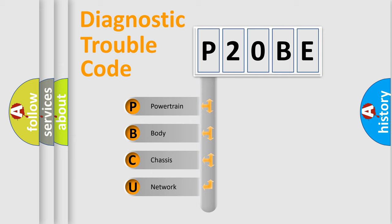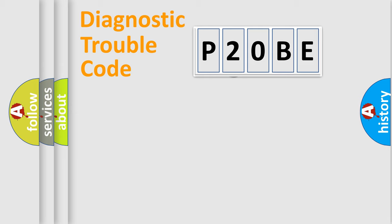We divide the electric system of automobile into four basic units: powertrain, body, chassis, and network. This distribution is defined in the first character code.